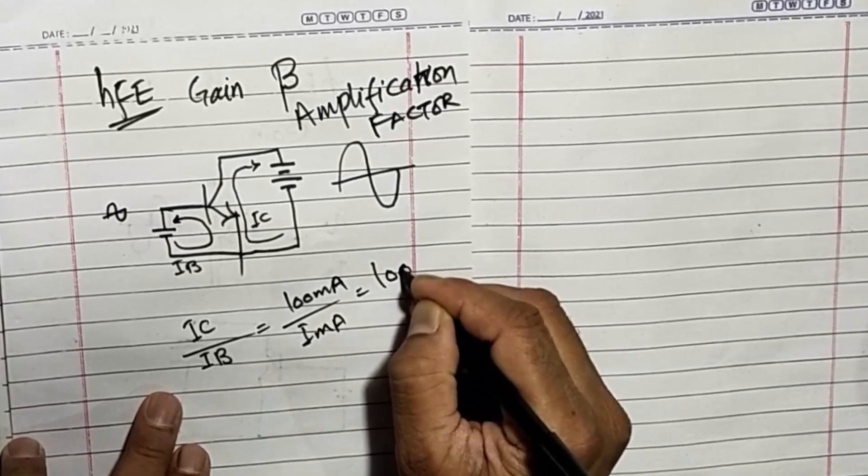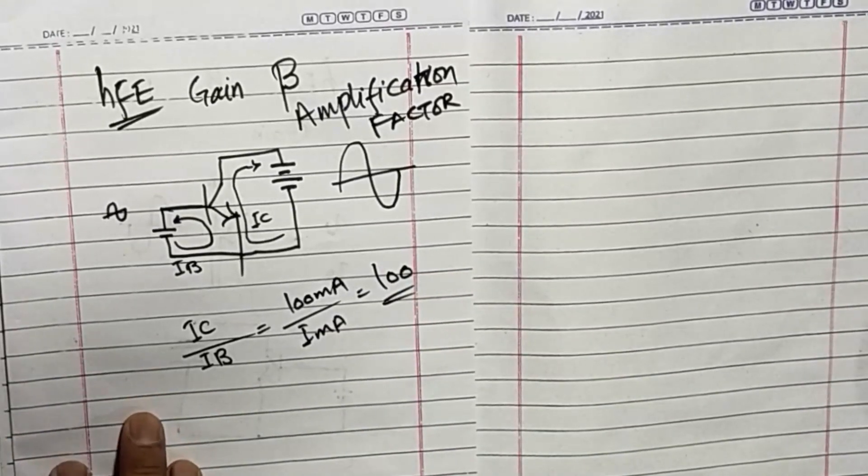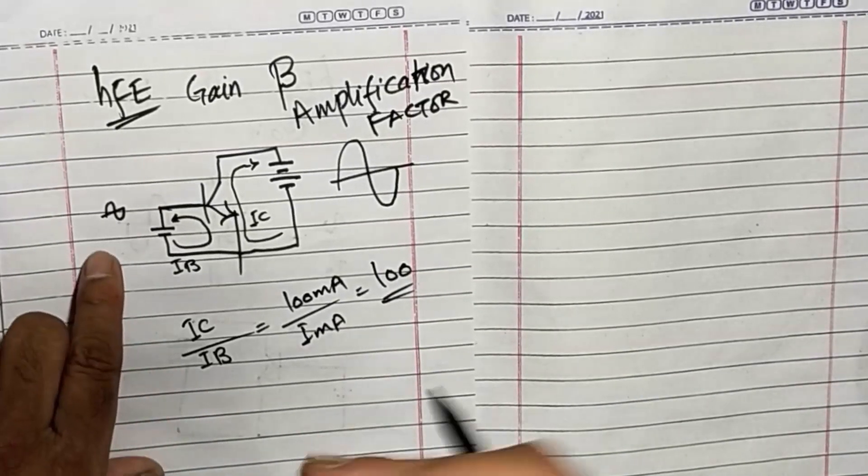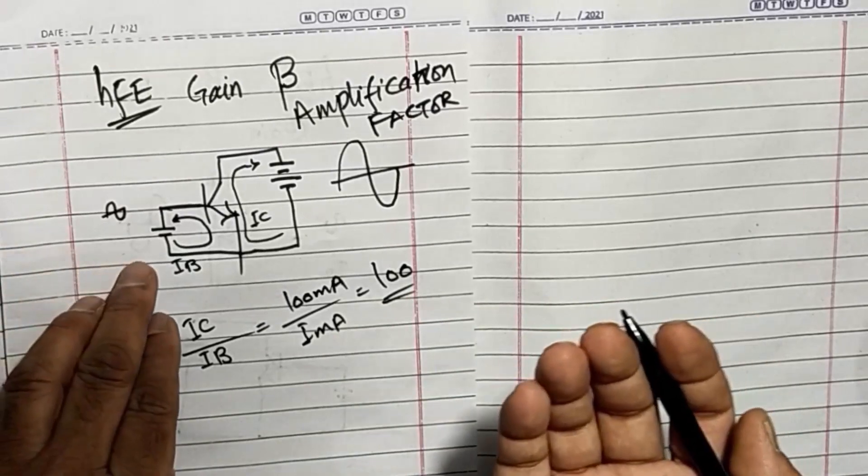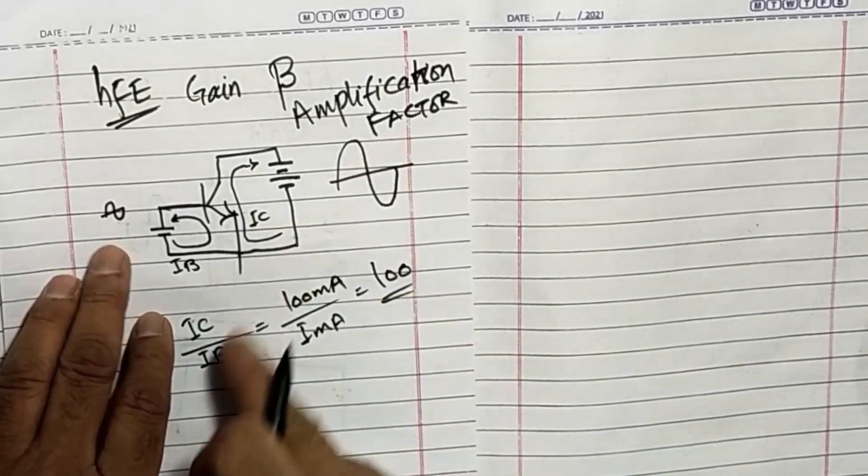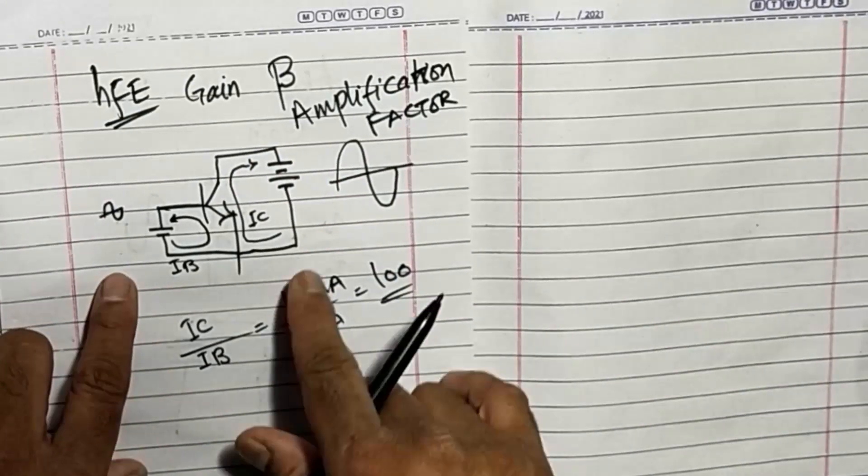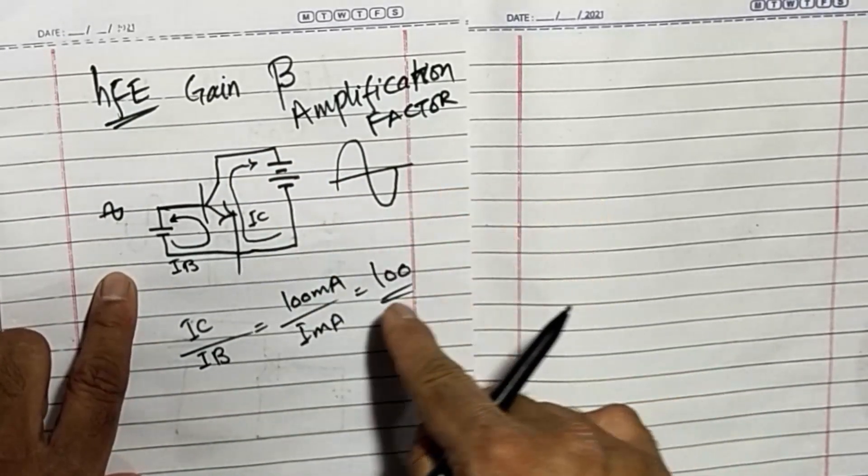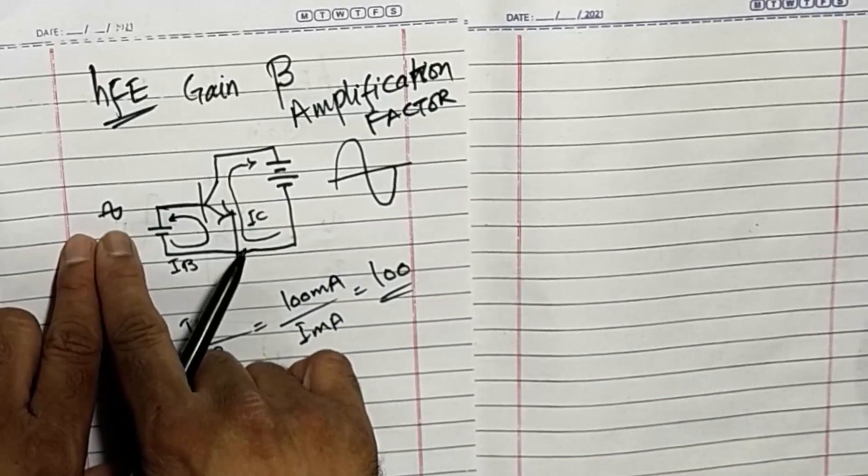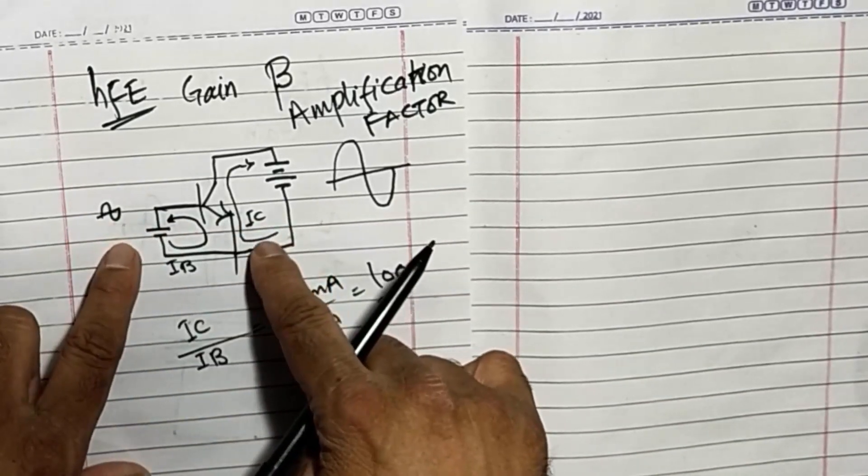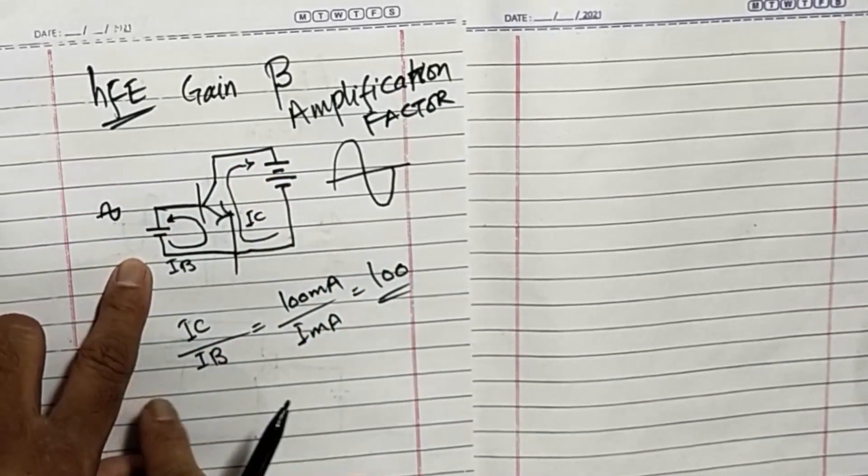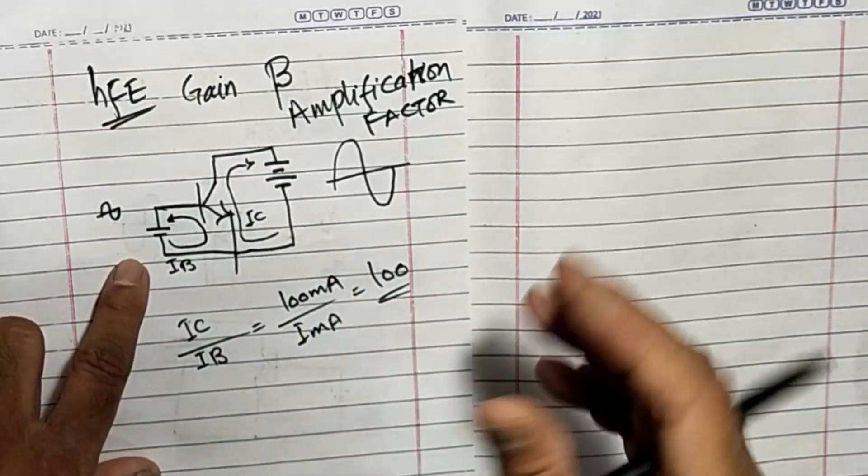Some transistors have higher amplification factors. If we apply 1 milliampere here and collector current flows 500 milliamperes, that transistor will have 500 gain.